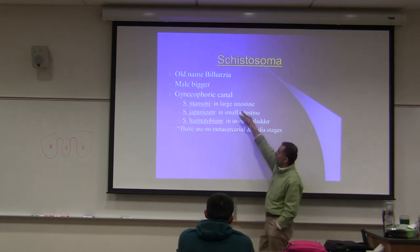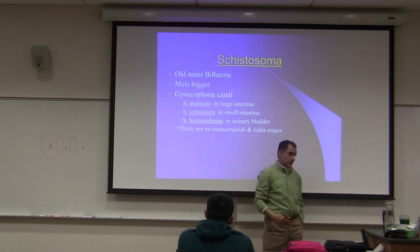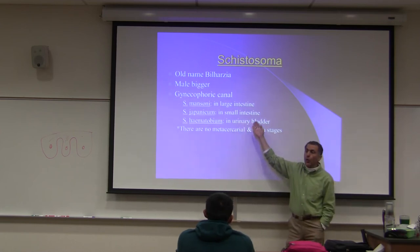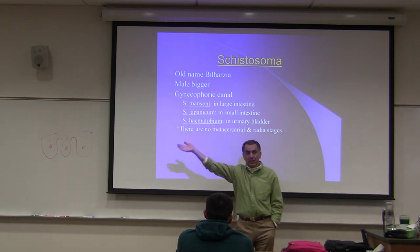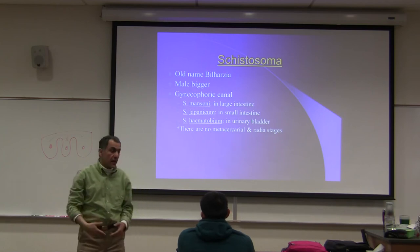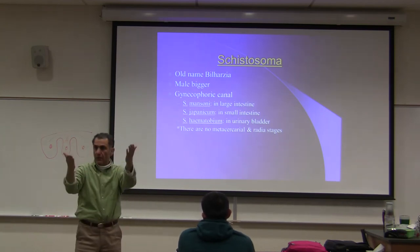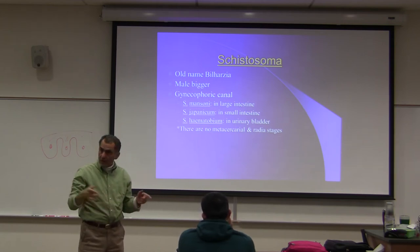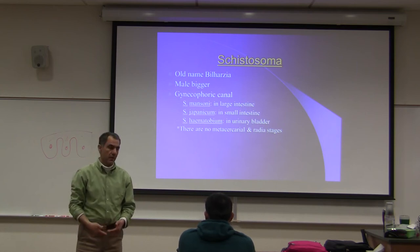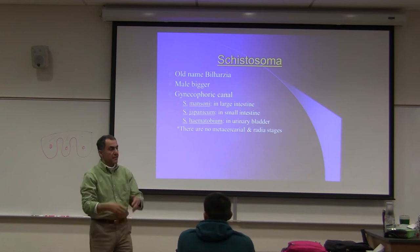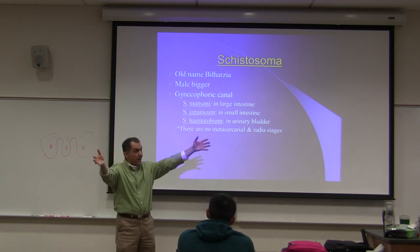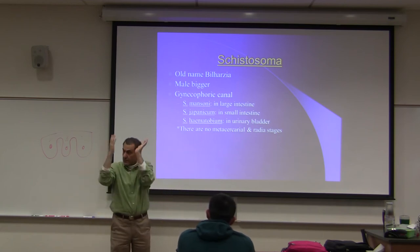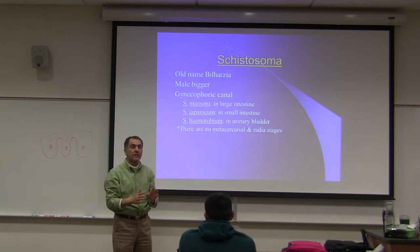Mansoni and japonicum give the person bloody feces. Haematobium gives the person bloody urine. In ancient Egypt, when a man had bloody urine it was considered a sign of adulthood - like menstruation for women. They would say 'you're an adult now, we can give you a wife and a herd of sheep, go start your family.' The men had to have bloody urine as a rite of passage.